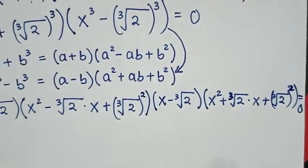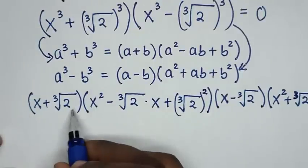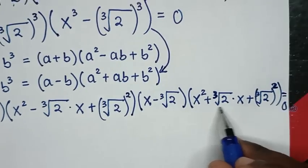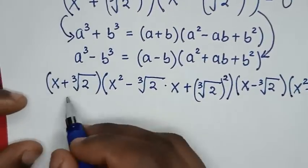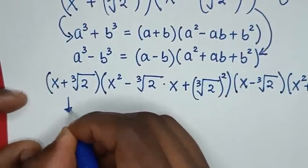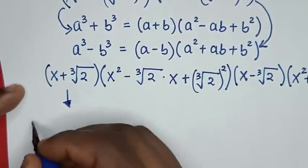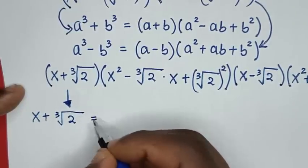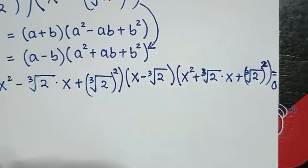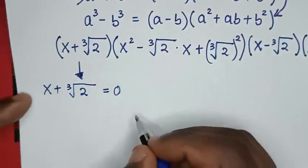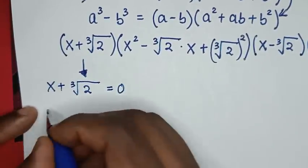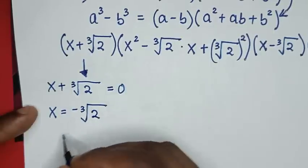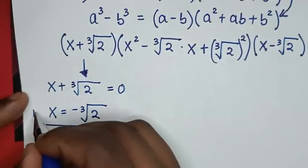Then, in the next step, from the left side we have four solutions — this solution, this solution, this solution, and this solution. Now, for the first linear factor, it will give a real solution. It will be x + ∛2 = 0. So this is the first solution. We take ∛2 to the other side, so x is equal to negative ∛2. This is the first real value of x.